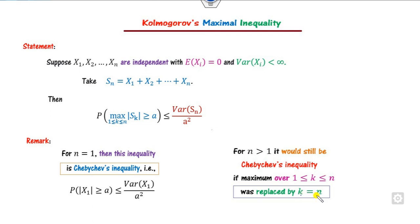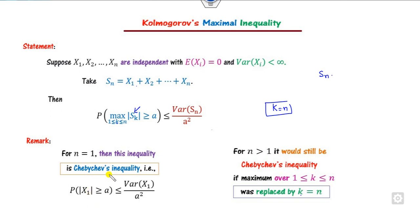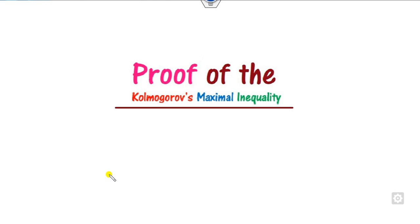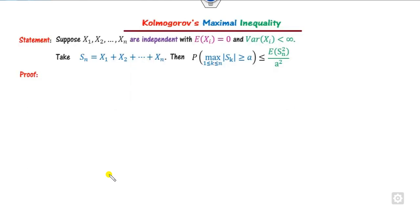On the other hand, if you replace k by n, then the maximum among the partial sums becomes S_n itself, and again it reduces to the Chebyshev inequality — since |S_n| gives back the Chebyshev form. Now let us look at the proof of the Kolmogorov maximal inequality, which is very simple.